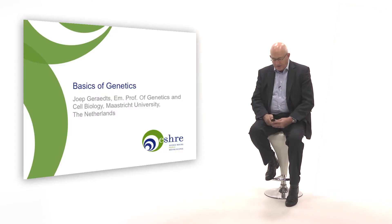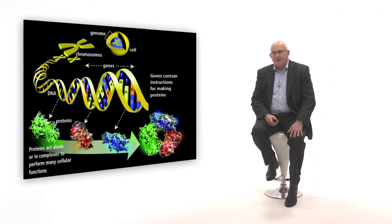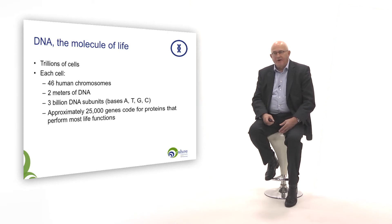To start with, we see a cell. Each body consists of many cells, and in each cell you will find about 2 meters of DNA. This DNA is sitting inside the chromosomes. We have 46 chromosomes, and in these chromosomes you will find this DNA. It will be transmitted to each cell of the body at each cell division. We have about 20 to 25,000 genes.